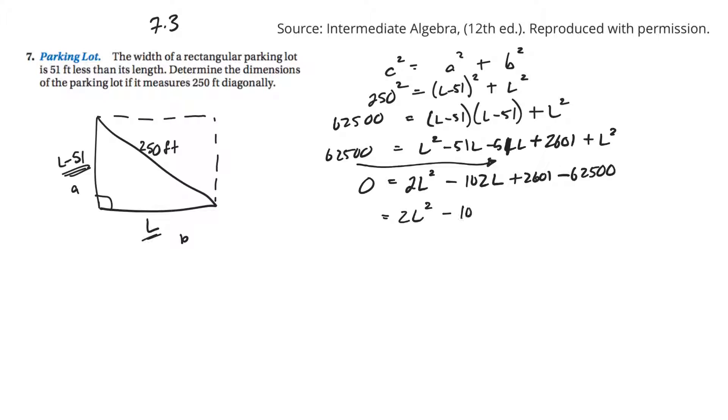So 102L, now 2601 minus 62500 is negative 59899.